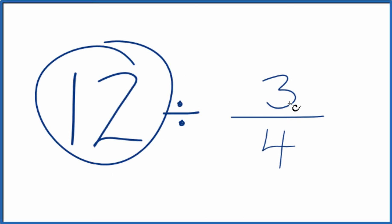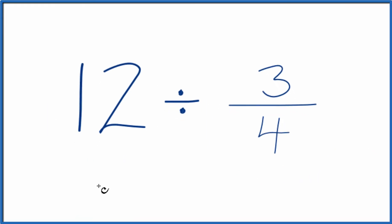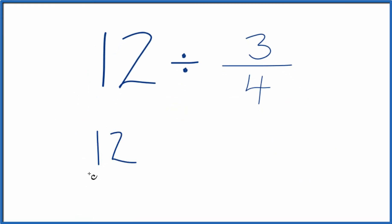If you need to divide 12 by 3 fourths, here's how you do it. Let's start by considering 12 as 12 over 1. 12 divided by 1 is still 12, but it gives us a fraction.